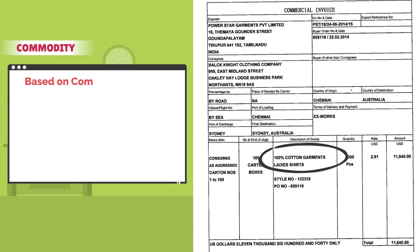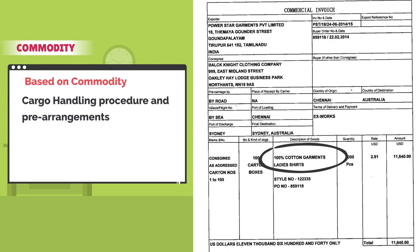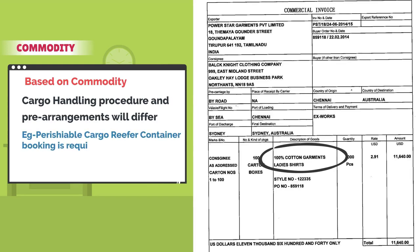Based on commodity, handling procedure and pre-arrangements will differ. For example, for perishable cargo, a reefer container booking is required. For general cargo, a general purpose container is required.